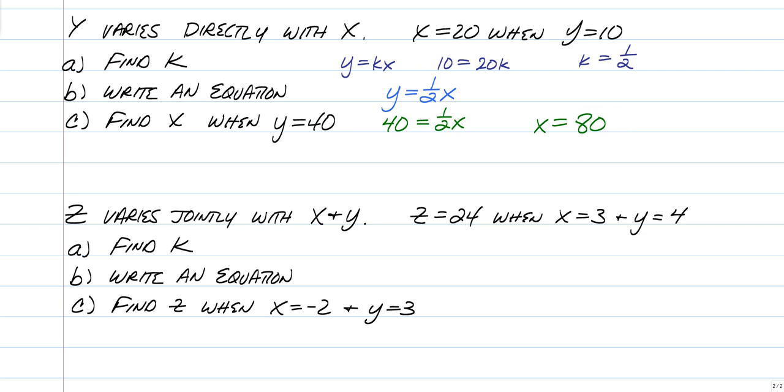Last one, Z varies jointly with X and Y, so Z is equal to KXY. Plug in our information, 24 is equal to K times 3 and 4. So that's 12. Divide both sides by 12, and K is equal to 2. Write our equation, Z is equal to 2 times X and Y. Use it to find Z when X is negative 2 and Y is 3. So Z is equal to 2 times a negative 2 times a positive 3. And Z is equal to a negative 12.